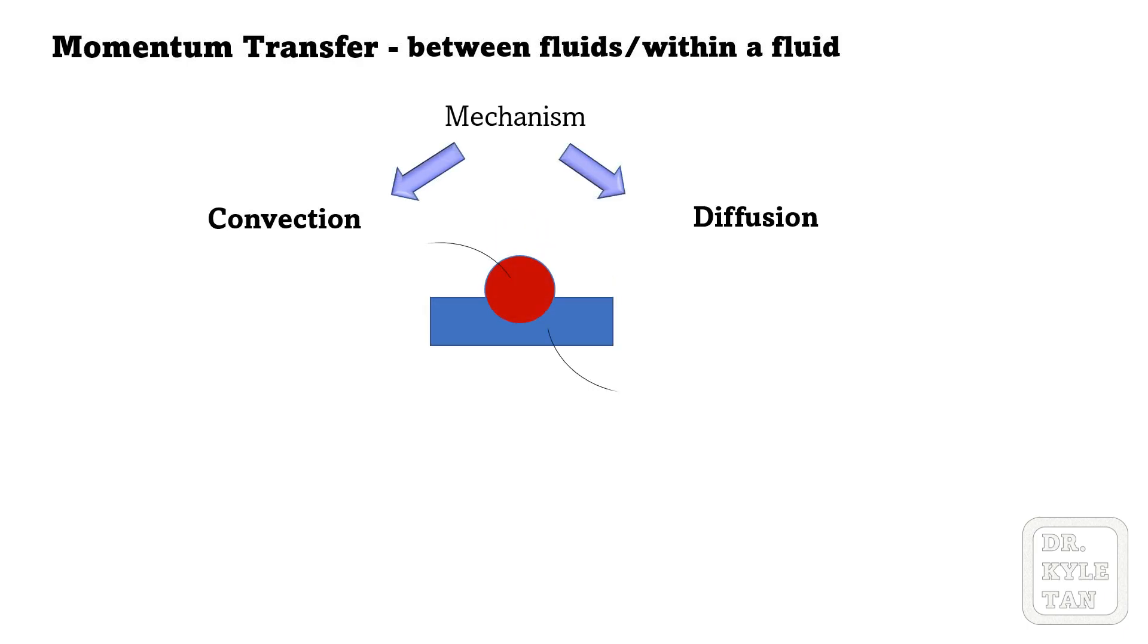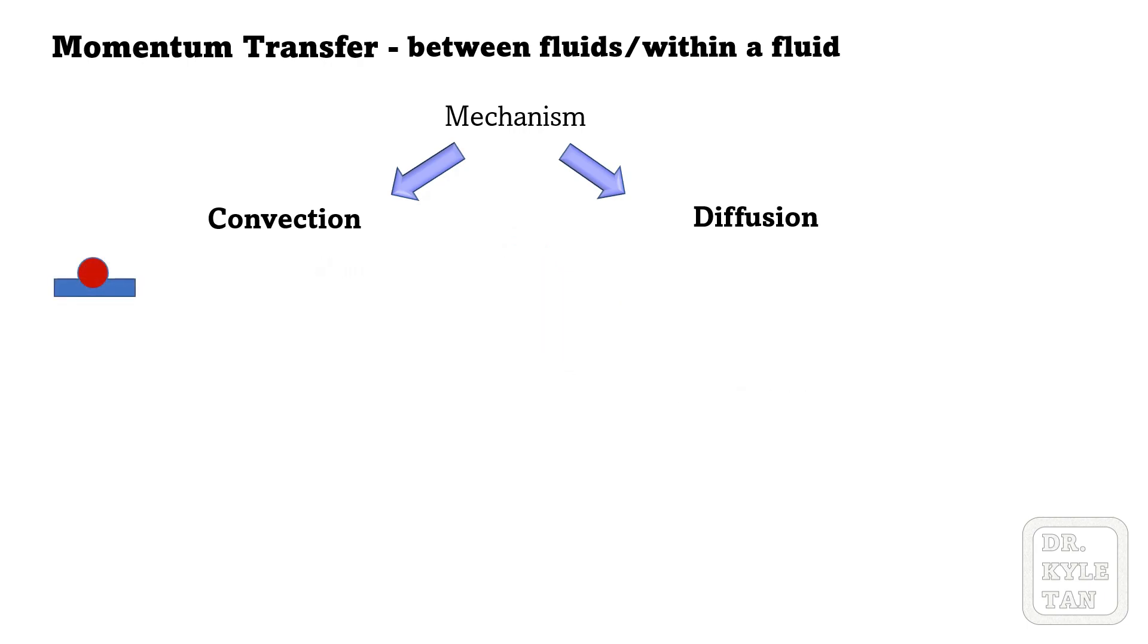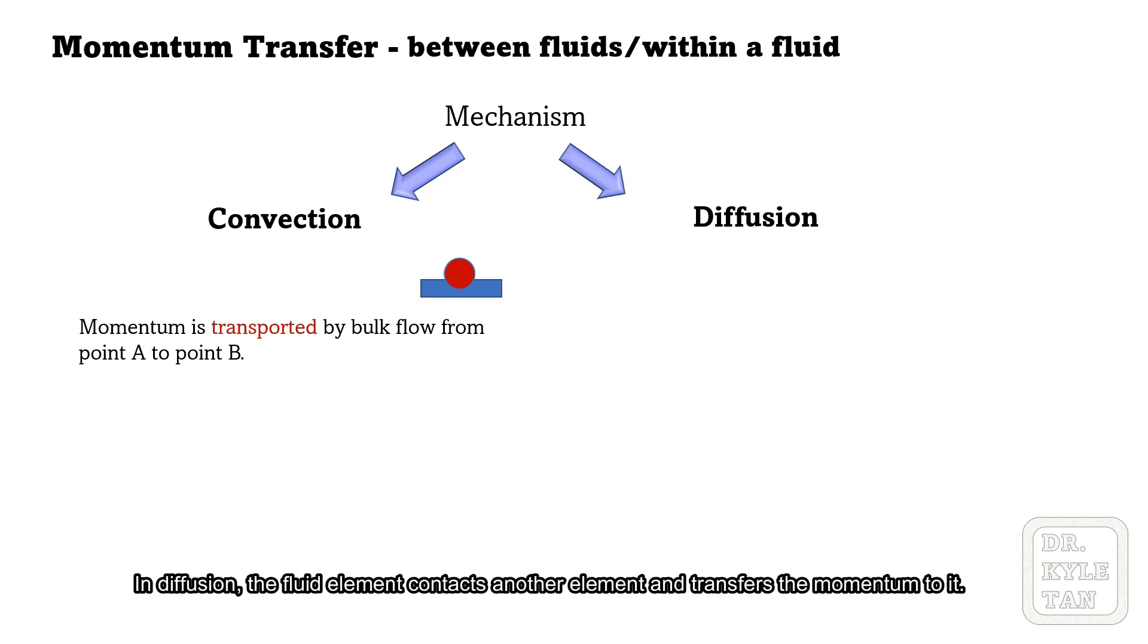For fluids, momentum transfer always takes place by two mechanisms at the same time, convection and diffusion. In convection, the fluid element carries the momentum from point A to point B. In diffusion, the fluid element contacts another element and transfers the momentum to it.